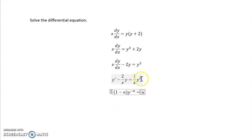But here, this y to the n term is n equals 2. So 1 minus 2, y^(-2) is negative y^(-2). So we're going to multiply the whole equation by that. So we get negative y^(-2) times y prime. And then the negative times the negative gives me a positive 2 over x. And multiplying y by y^(-2) gives me y^(-1). And then on the other side of the equation, the y² and the y^(-2) cancel out, and I just get negative 1 over x.